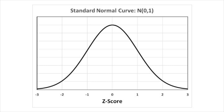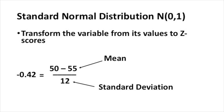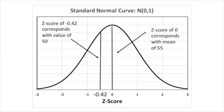A z-score tells you how many standard deviations you are above or below the mean. Here's a picture of a standard normal curve — a normal distribution with a mean of zero and a standard deviation of one. We can calculate a z-score to find what percentage of observations fall between 50 and 55. For a value of 50: take 50, subtract the mean of 55, divide by the standard deviation of 12, and you get a z-score of minus 0.42. In other words, 50 is 0.42 standard deviations below the mean. On the standard normal curve, a z-score of 0 corresponds with the mean value of 55, but a z-score of minus 0.42 corresponds with a value of 50.